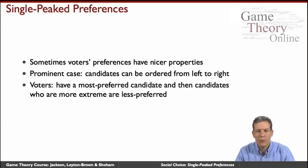Sometimes voters' preferences have nice properties, and a very prominent case of that is when candidates can actually be ordered from left to right. So we can think of left-most candidates, right-most candidates, and candidates can be nicely ordered. And in situations where people have a most preferred outcome or candidate on this spectrum, then candidates are going to have nice properties in terms of having an existing Condorcet winner, having nicely defined voting schemes, and so forth.